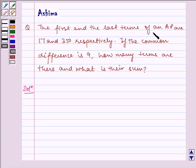The first and the last terms of an AP are 17 and 350 respectively. If the common difference is 9, how many terms are there and what is their sum?